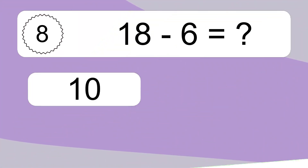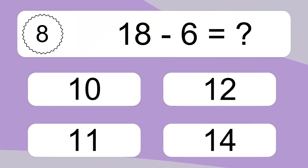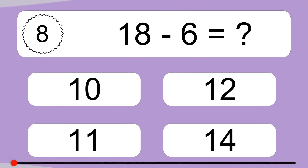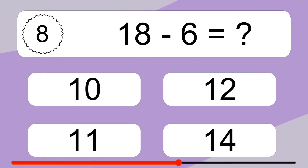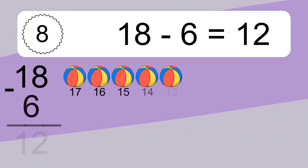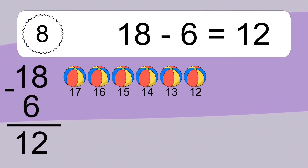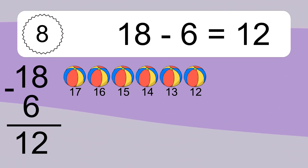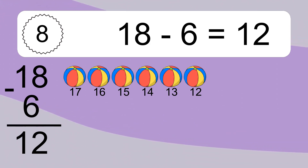18 minus 6 equals what? 18 minus 6 equals 12. Let's count it: 17, 16, 15, 14, 13, 12.